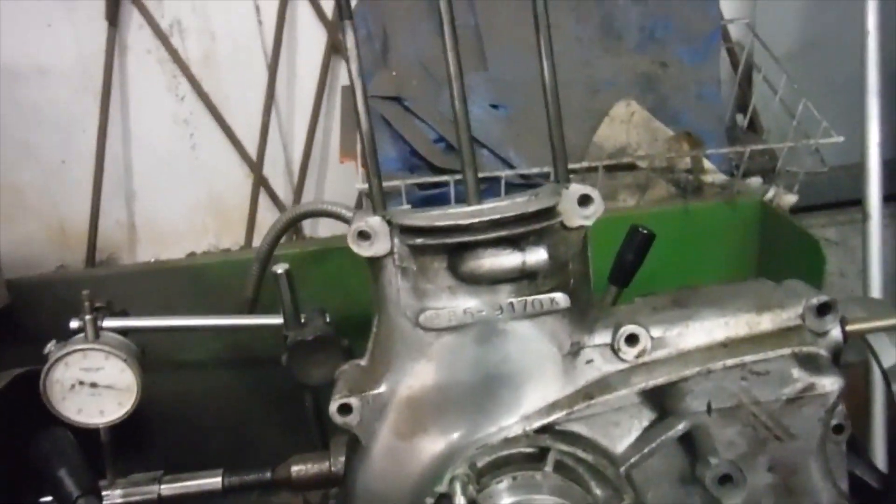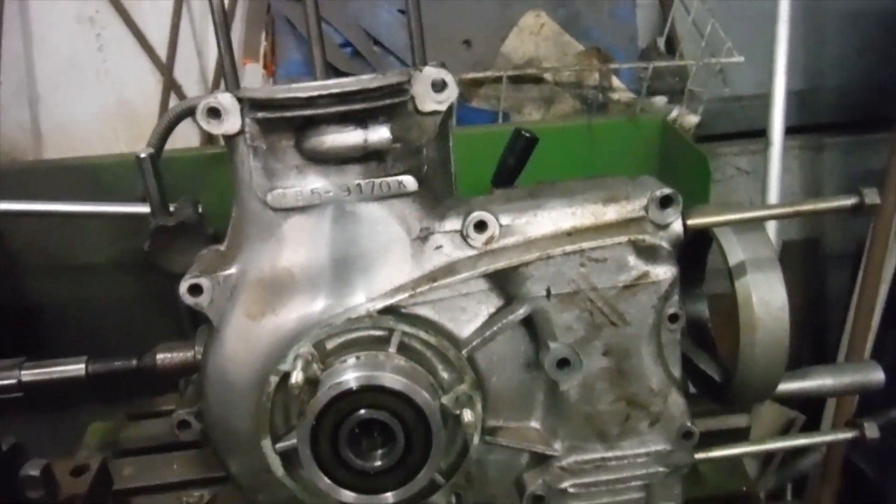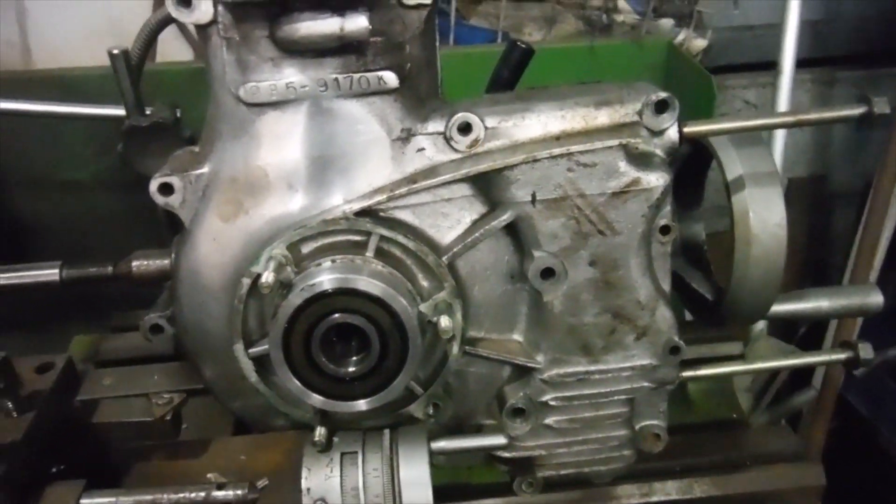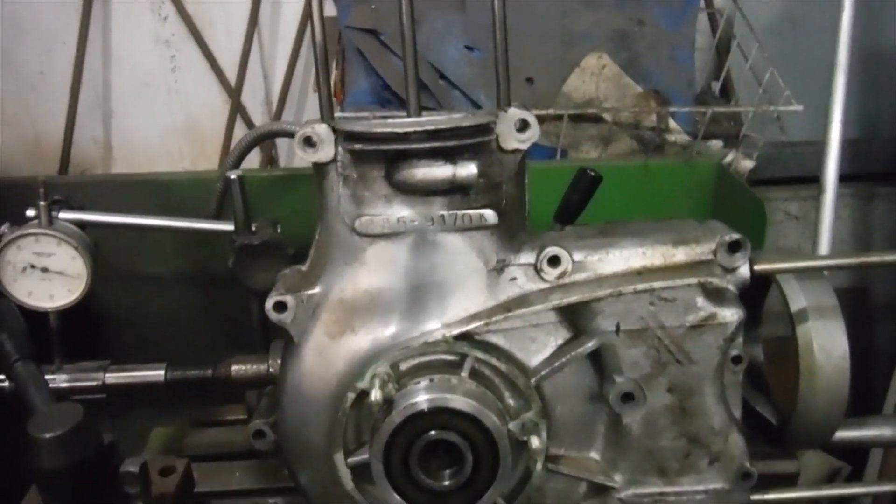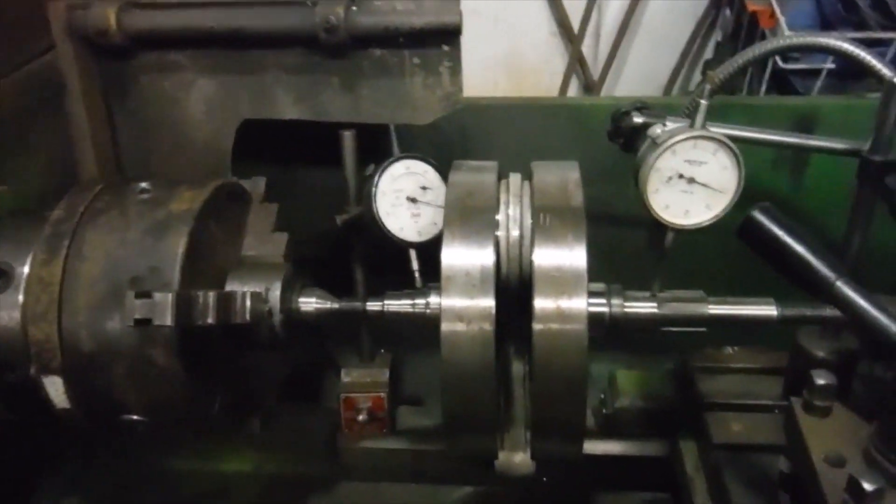The owner brought the engine to me complete with the gearbox on it. He'd already stripped the primary drive side down, but the gearbox was still bolted to the engine and the engine still had the barrel, piston, and head on, so I stripped all that and got the crank out.